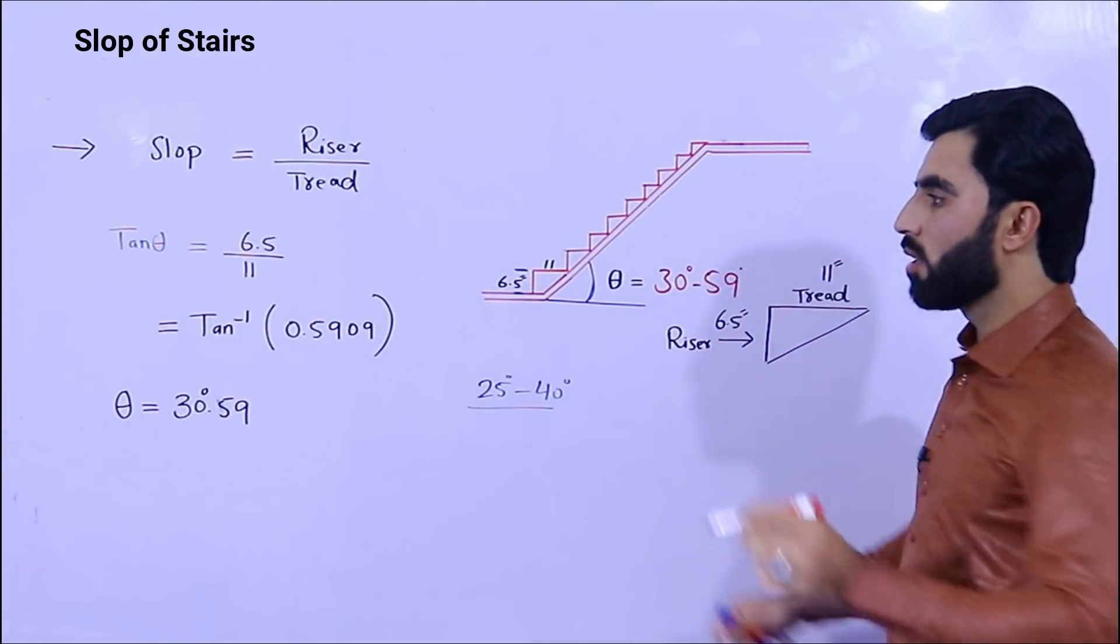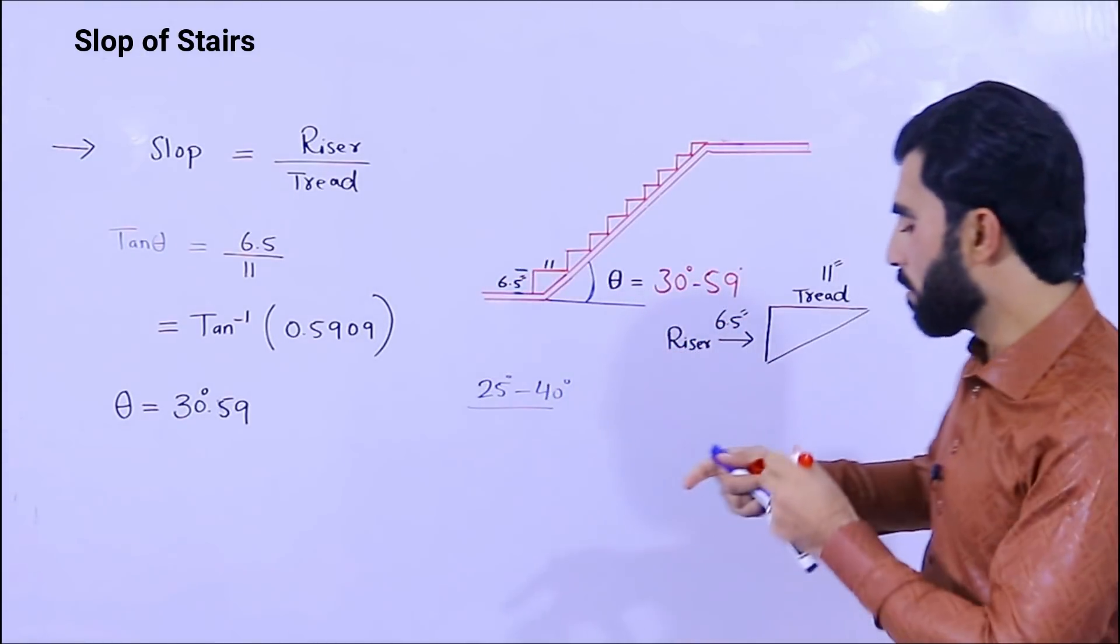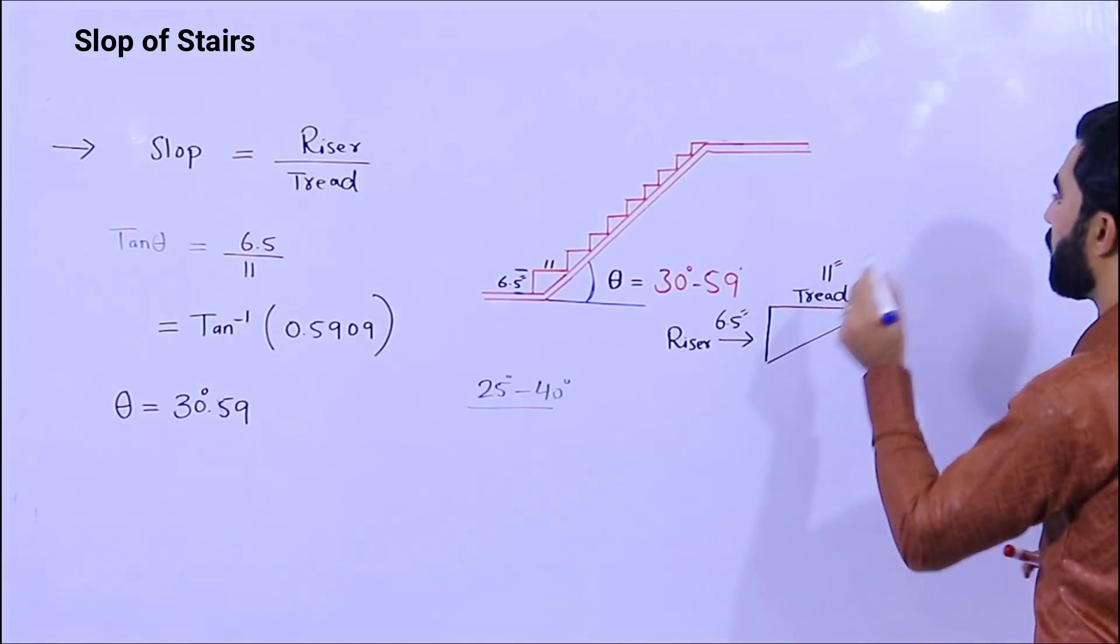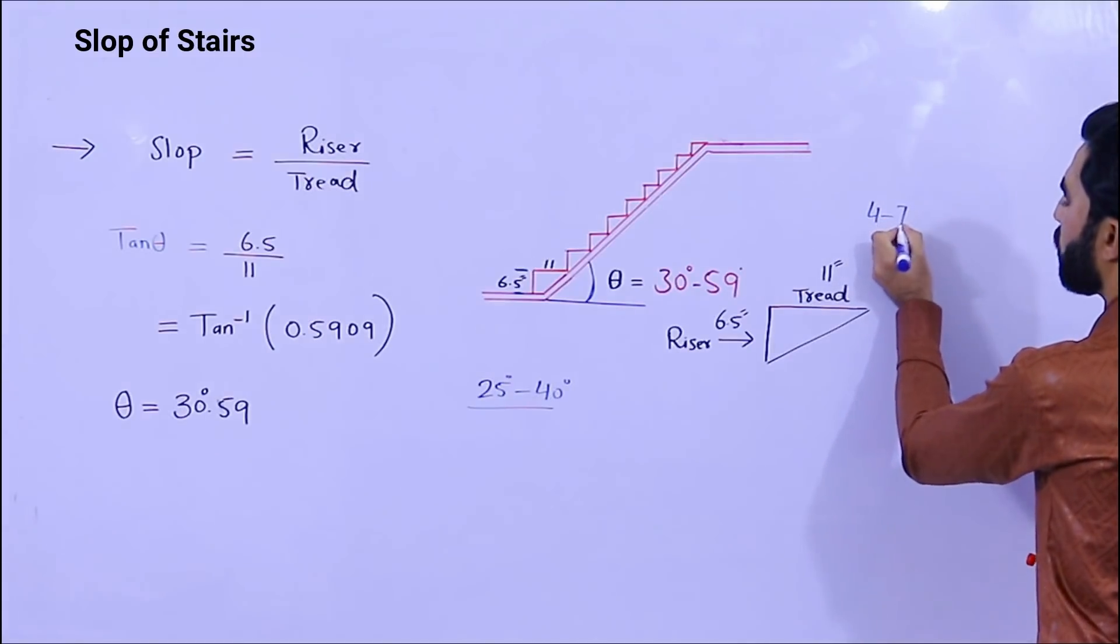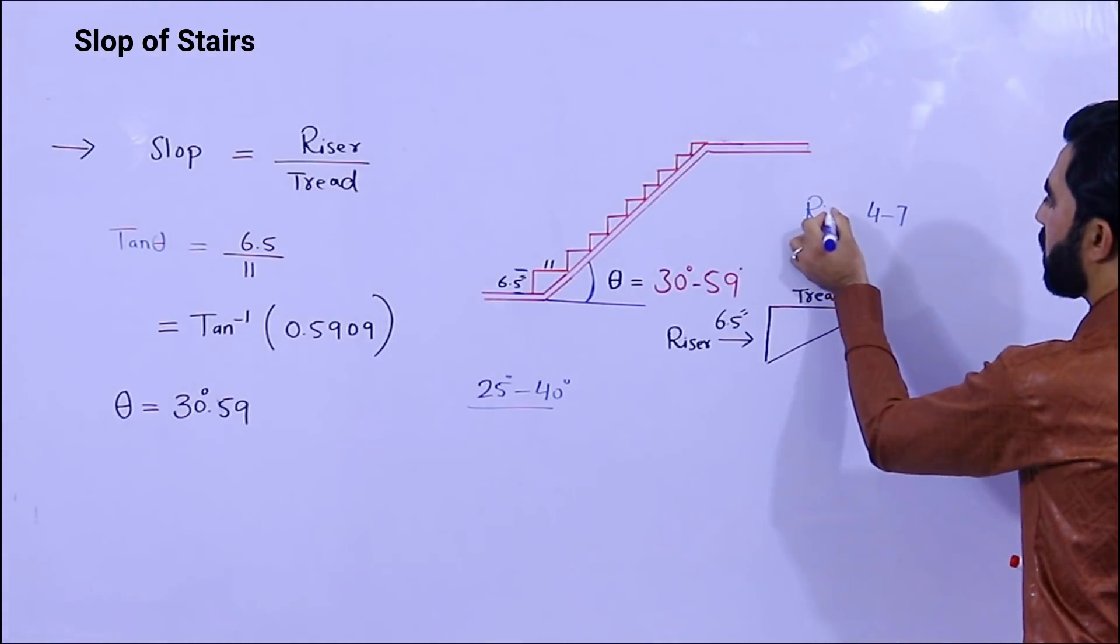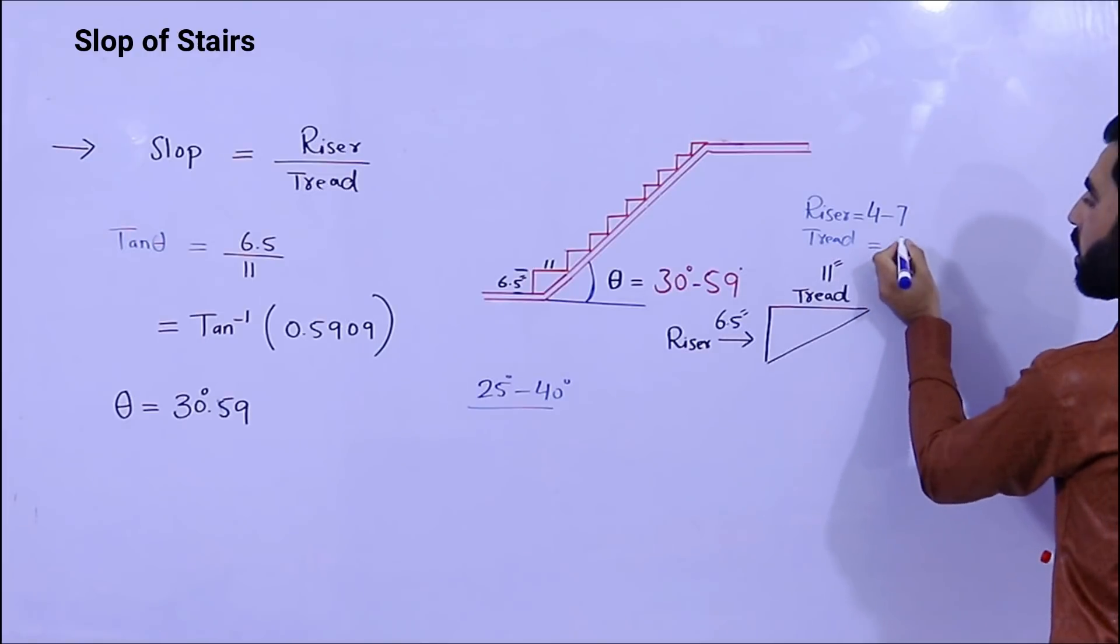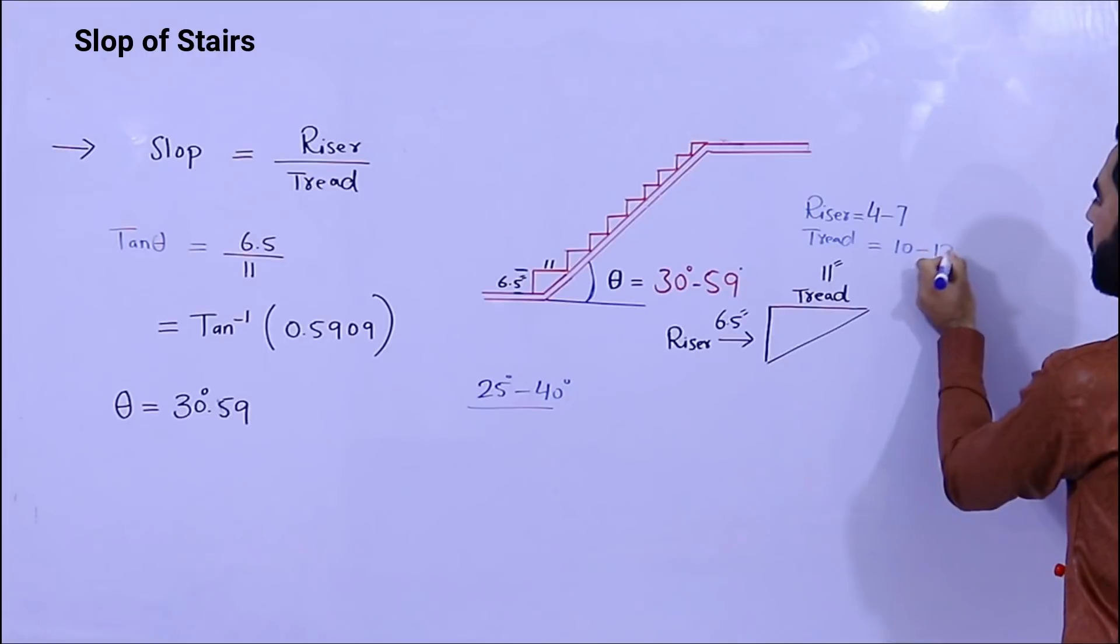30.59 is the angle of stair. So slope equals riser divided by tread. Remember one thing, the riser should not be less than or between 4 to 7 inches. But the tread should be between 10 to 12 inches.